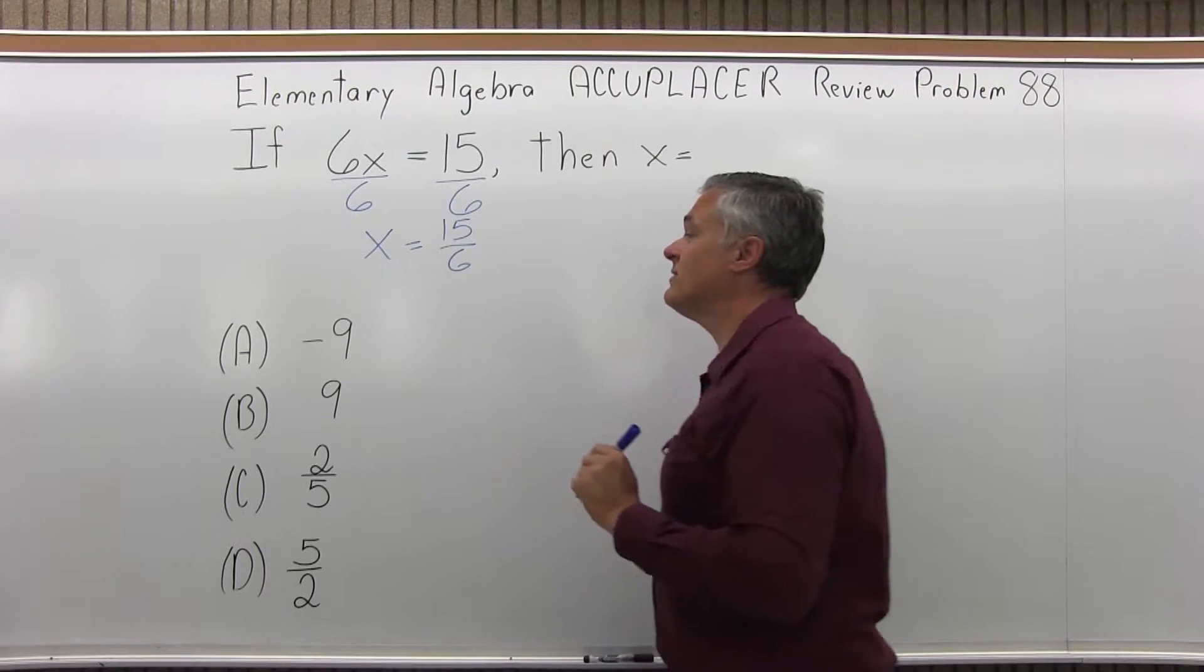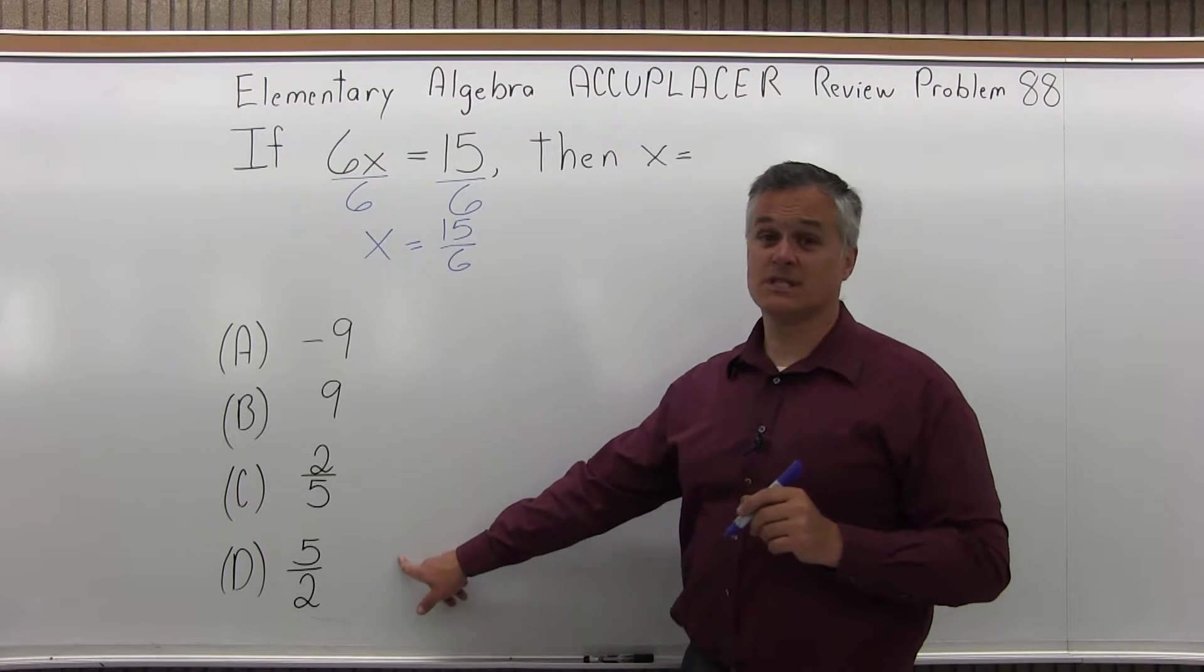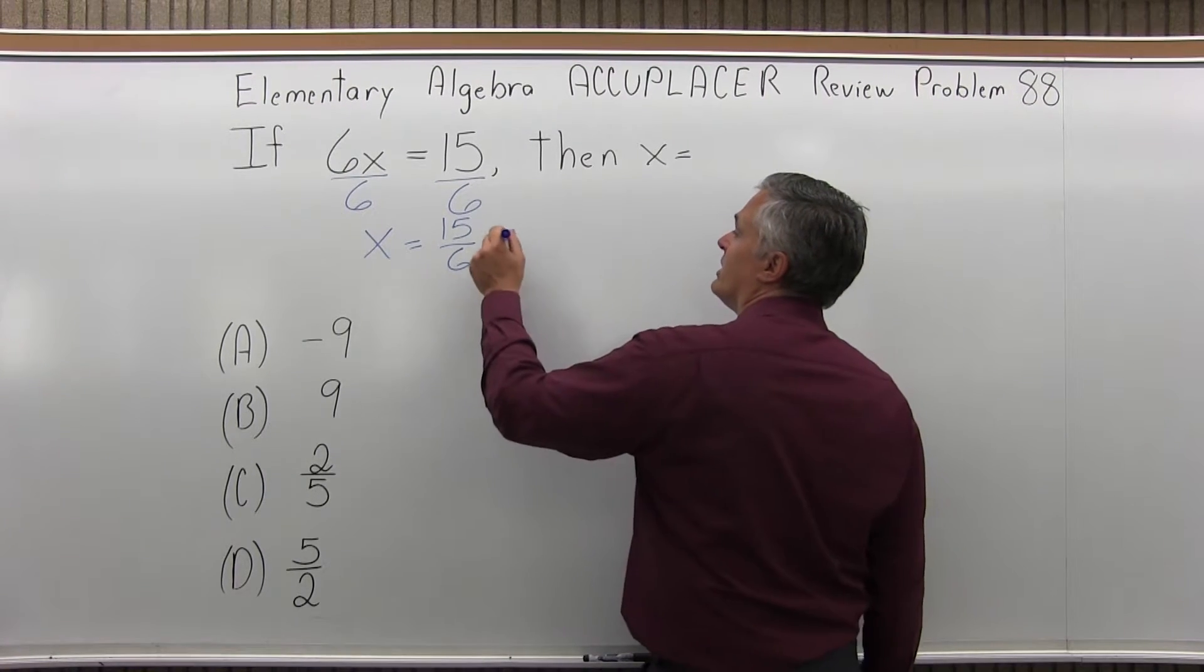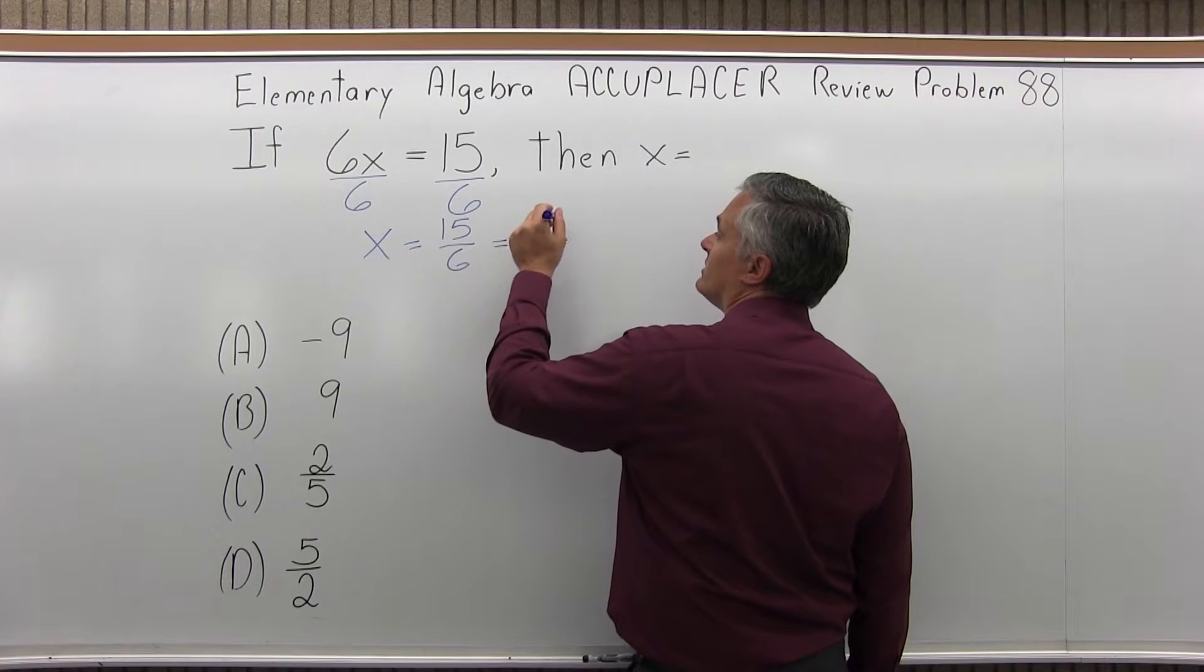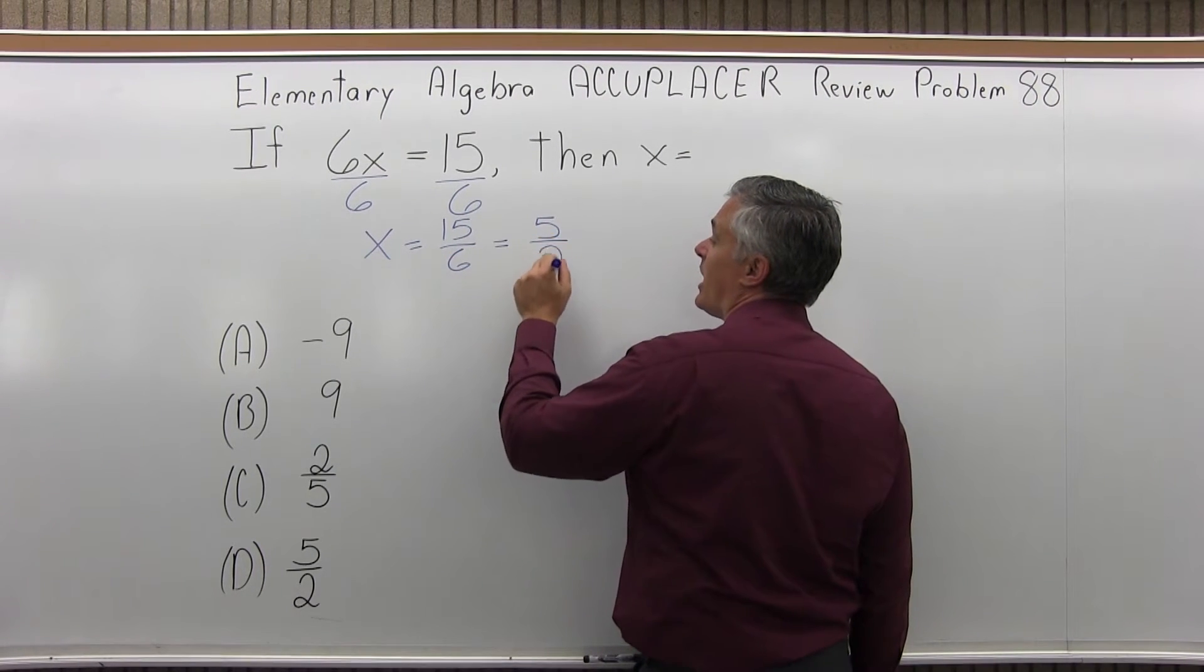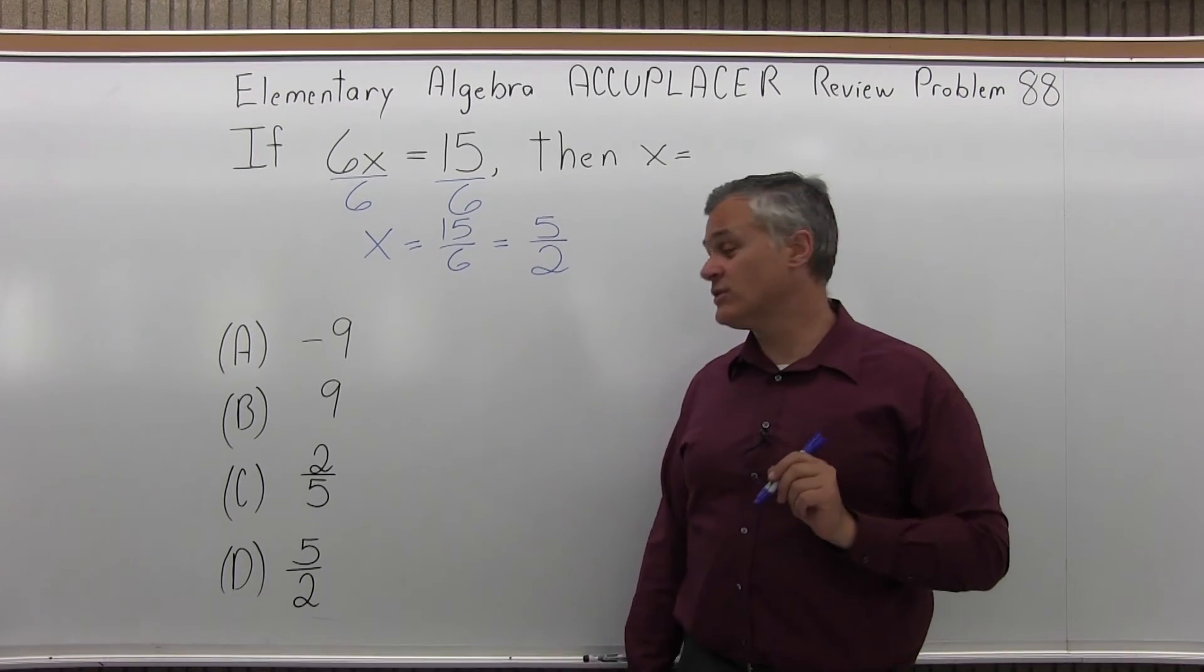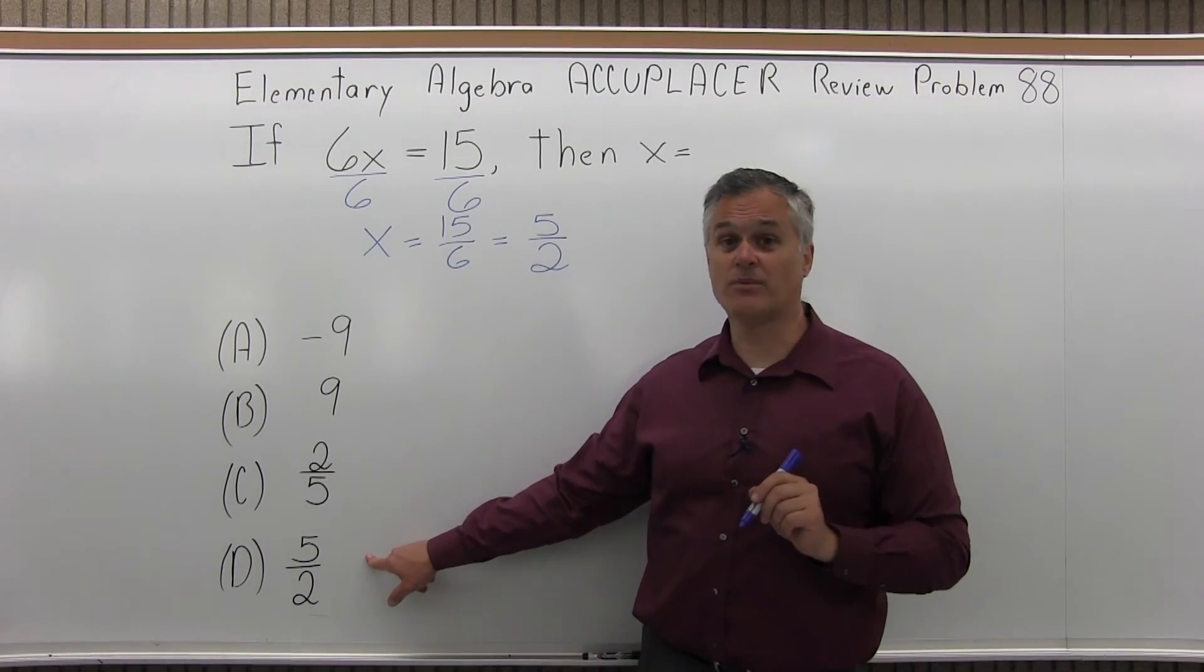Now the 6 doesn't go into the 15 evenly, but I can reduce both of them by 3. If you notice, 15 over 6 is not any of the options listed. But 3 goes into 15 evenly, it goes in 5 times, and 3 goes into 6 evenly, it goes in twice. So I can reduce my answer of 15 over 6 down to 5 over 2, which is one of my options, it's option D.